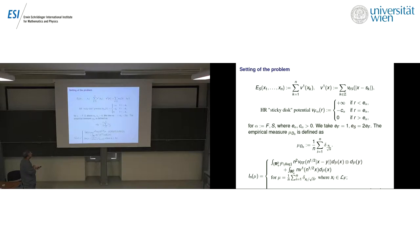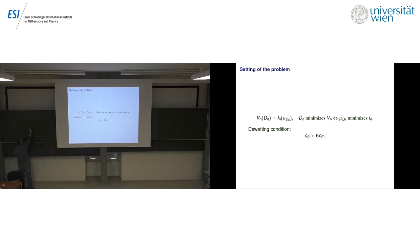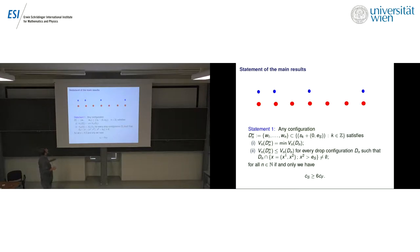We have a sharp wetting condition: C_S less than 6*C_F. The simple interpretation is that if C_S is greater than or equal to 6*C_F, it means a film atom is happier being in contact with the substrate than being somewhere above in the volume and having 6 film neighbors. The statements follow from this condition.